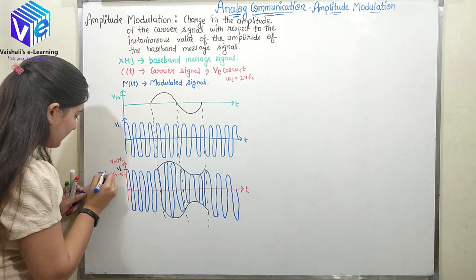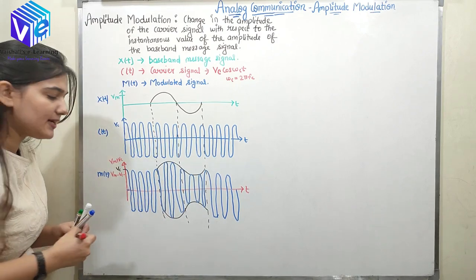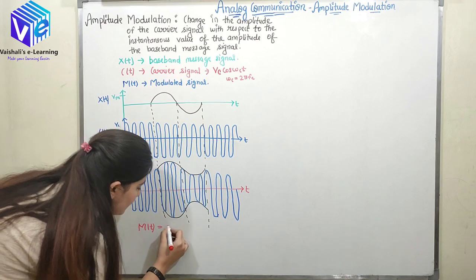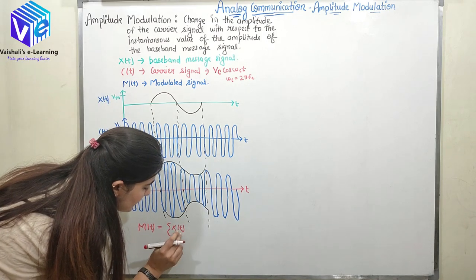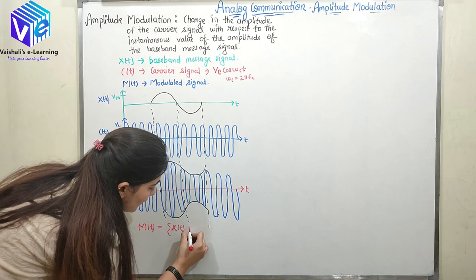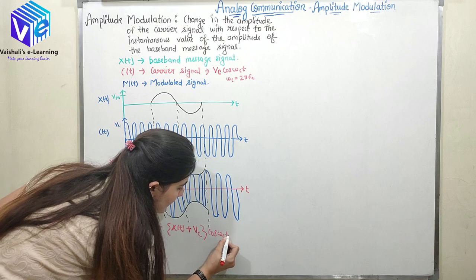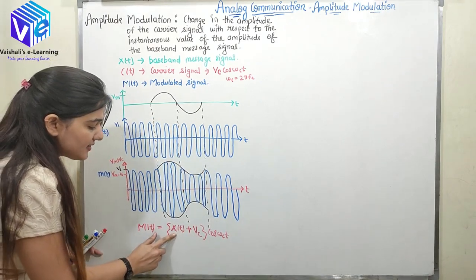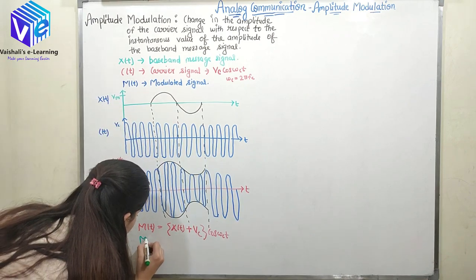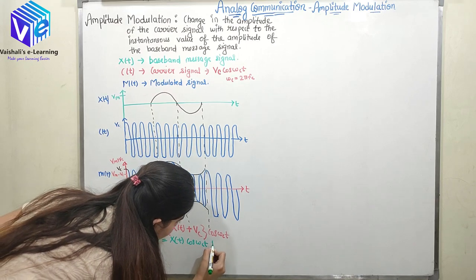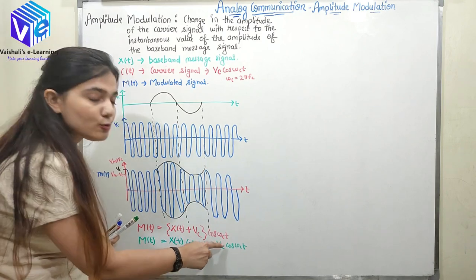This is my modulated signal M(t). This was my c(t) and this was my x(t). If I have to represent it mathematically, I just added the amplitude, so here the amplitude is Vm plus Vc. Whatever my x(t) is — x(t) is my modulating signal, the message signal — it is added to the amplitude of the carrier signal, and the frequency remains the same, so omega is same. I am just adding the message signal to the amplitude. M(t) can be represented as the summation: x(t)·cos(ωct) plus Vc·cos(ωct).